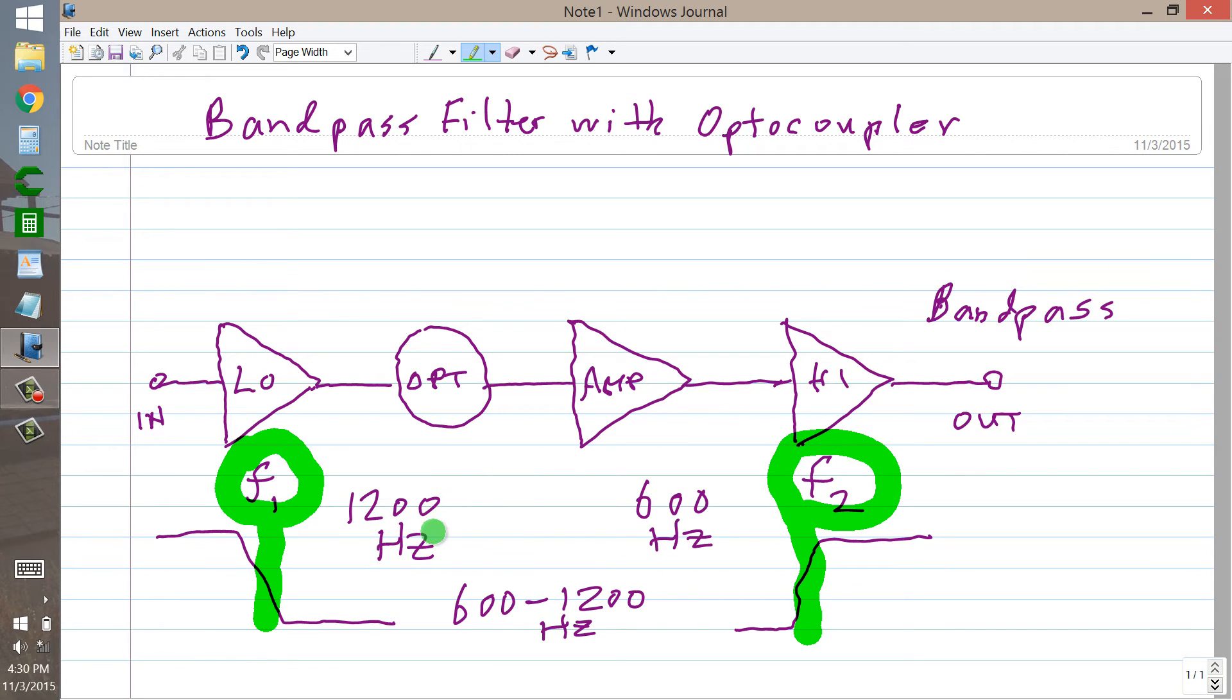Anything outside of this range will be choked off by one or the other of these filters. Anything above 1200 Hz will get choked off by the low pass filter, and anything below 600 Hz will get choked off by the high pass filter.